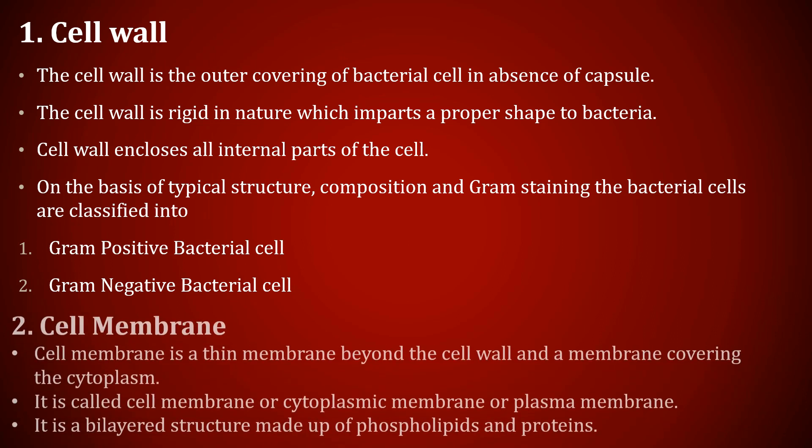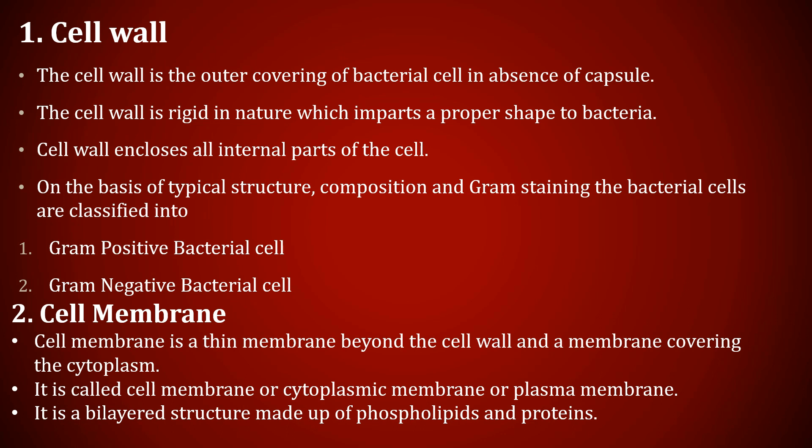The next one is cell membrane. Cell membrane is a thin membrane beyond the cell wall, covering the cytoplasm. It is also called cytoplasmic membrane or plasma membrane. It is a bilipid structure made up of phospholipids and proteins. The phospholipid content is about 20 to 30 percent and protein content is about 60 to 70 percent.